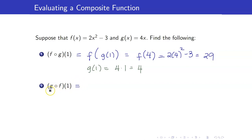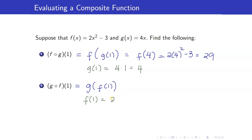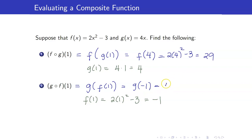Next, let us compute g circle f of 1. This is g of f of 1, which means we have to compute f of 1 first. f of 1 is equal to 2 times 1 squared minus 3, that's 2 minus 3, which is negative 1. I will now plug that in — replacing negative 1 for f of 1, so I'm calculating g of negative 1. That's 4 times negative 1, equal to negative 4.